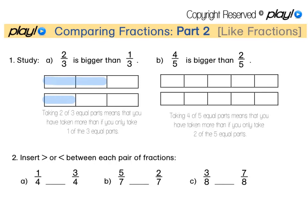For B, 4 fifths, let's shade it in here as 5 equal parts and we take 4 of the parts, is bigger than if you only take 2 fifths.